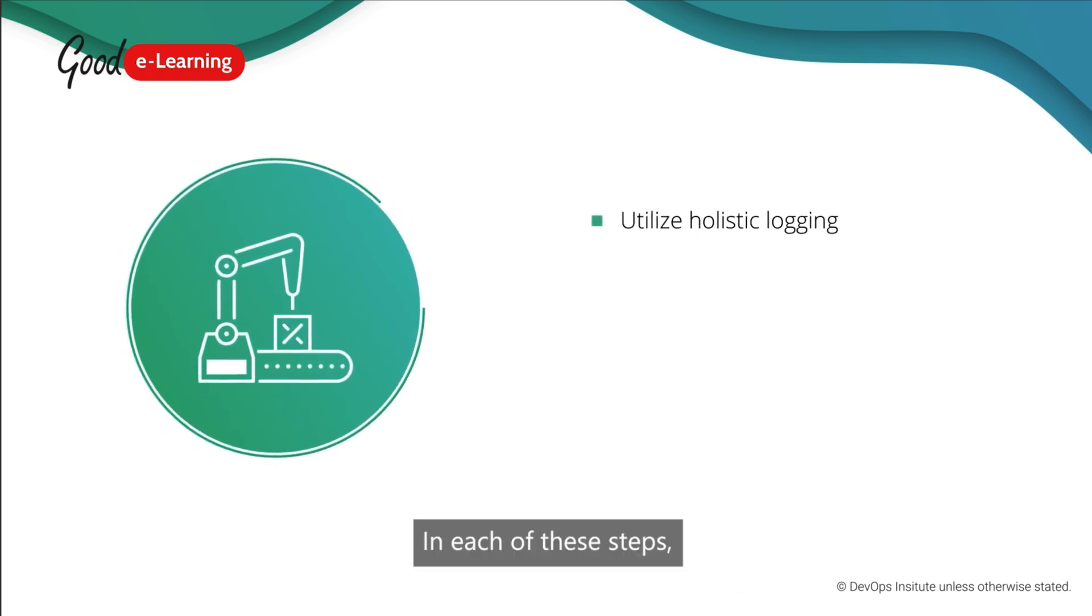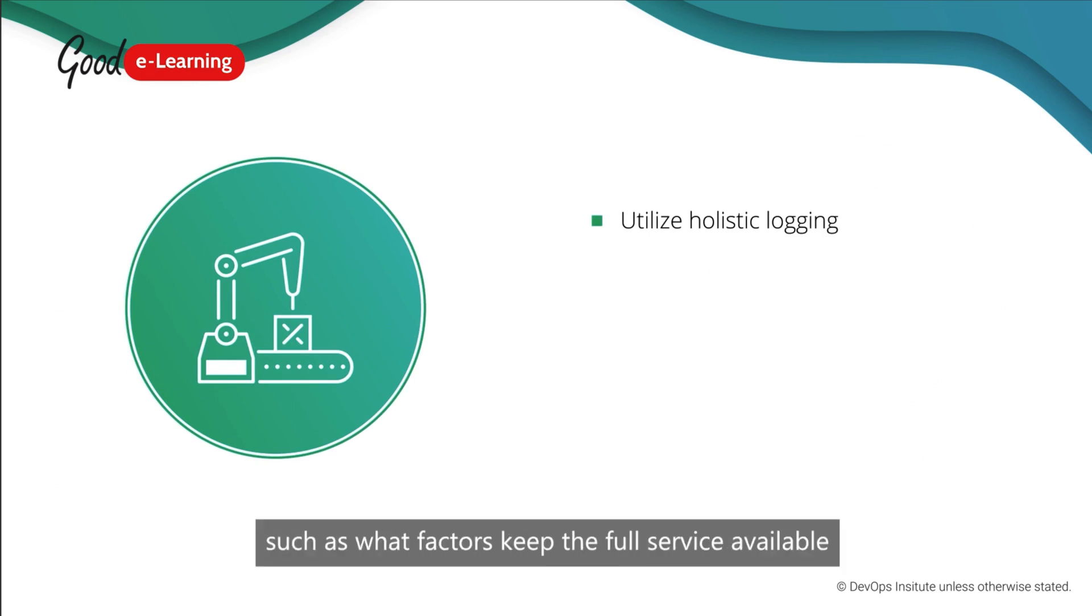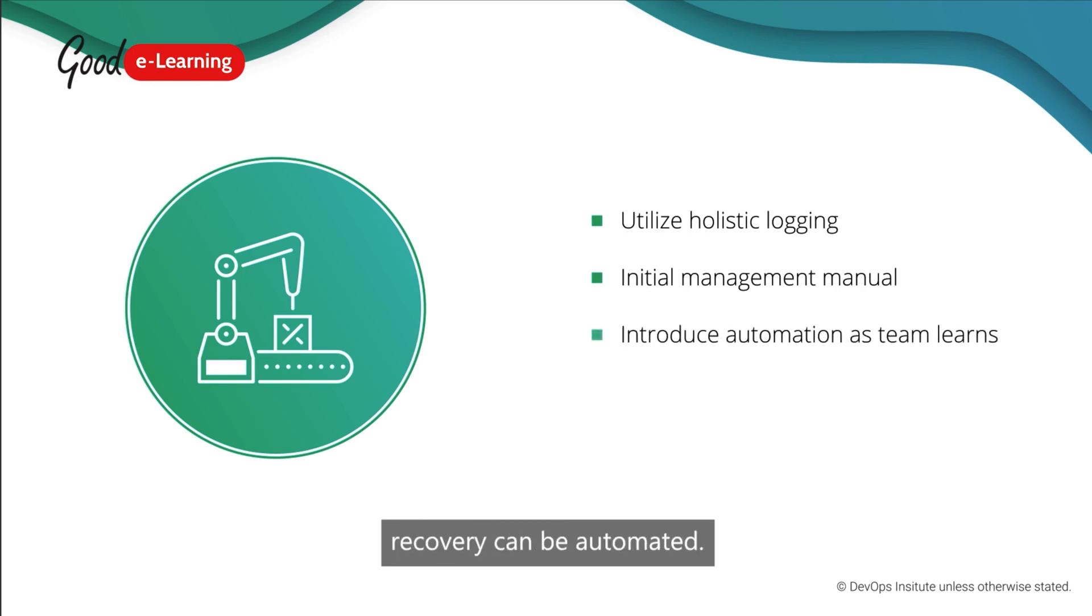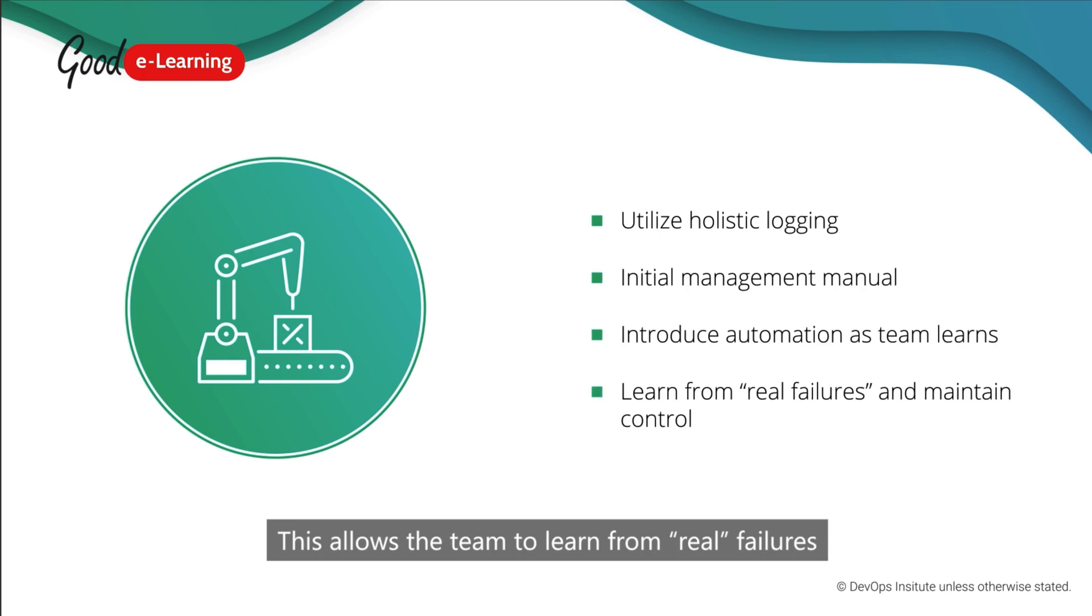In each of these steps, look at holistic logging, such as what factors keep the full service available and identify dependencies. Handle errors and recover manually at first, and as learning increases, recovery can be automated. This allows the team to learn from real failures, but still keep an element of control.